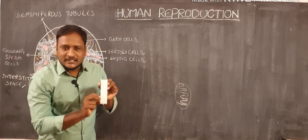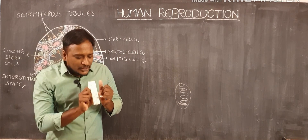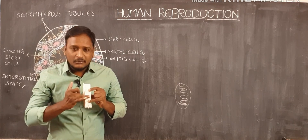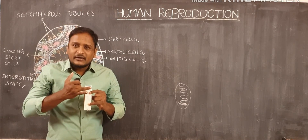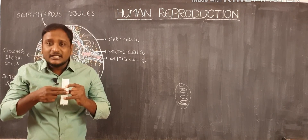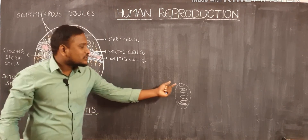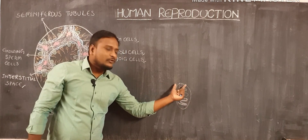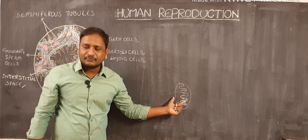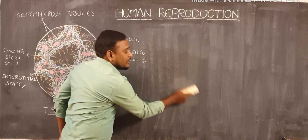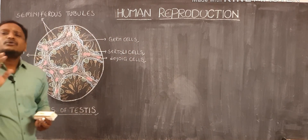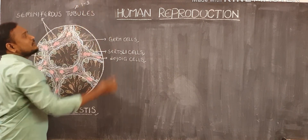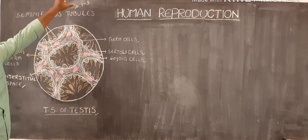For example, here the tunica albuginea is entering into the testes, forming one compartment here, one compartment here, one compartment here — likewise the testes is divided into different compartments. So the tunica albuginea is penetrating into the testes and 250 compartments will be present. In each compartment, we can observe one to three seminiferous tubules.